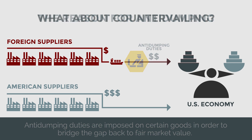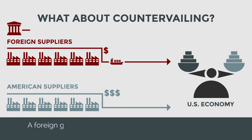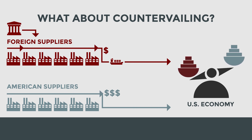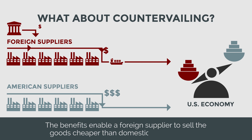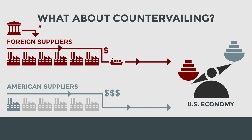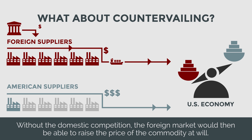Countervailing is very similar to anti-dumping, with one significant difference. They are established when a foreign government provides assistance and or subsidies to local exporting manufacturers, such as tax breaks. The benefits enable a foreign supplier to sell goods cheaper than domestic manufacturers. Once again, the increased amount of importing can potentially cause U.S. manufacturers to close when they cannot compete, and without the domestic competition, the foreign market would then be able to raise the price of the commodity at will.